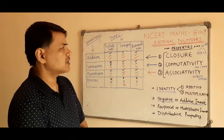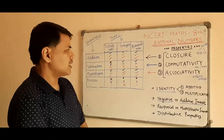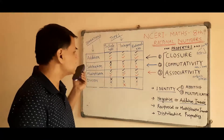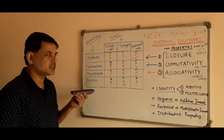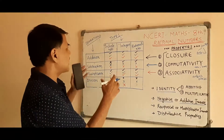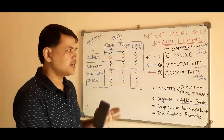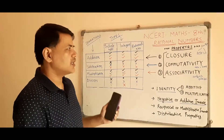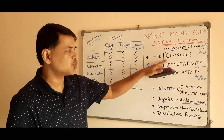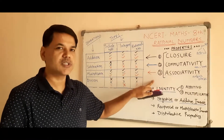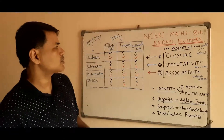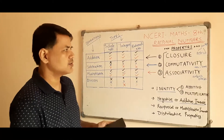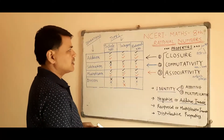We will start with these properties. There are different types of numbers and different operations — addition, subtraction, multiplication, and division. Overall, the combinations of properties, types, and operations give a lot of examples. I request everyone to watch this video till the end to understand what these properties are, how they are defined, and how we can check them. Once you understand this, for any operation and any type of number, you can easily check whether a property is true or not.